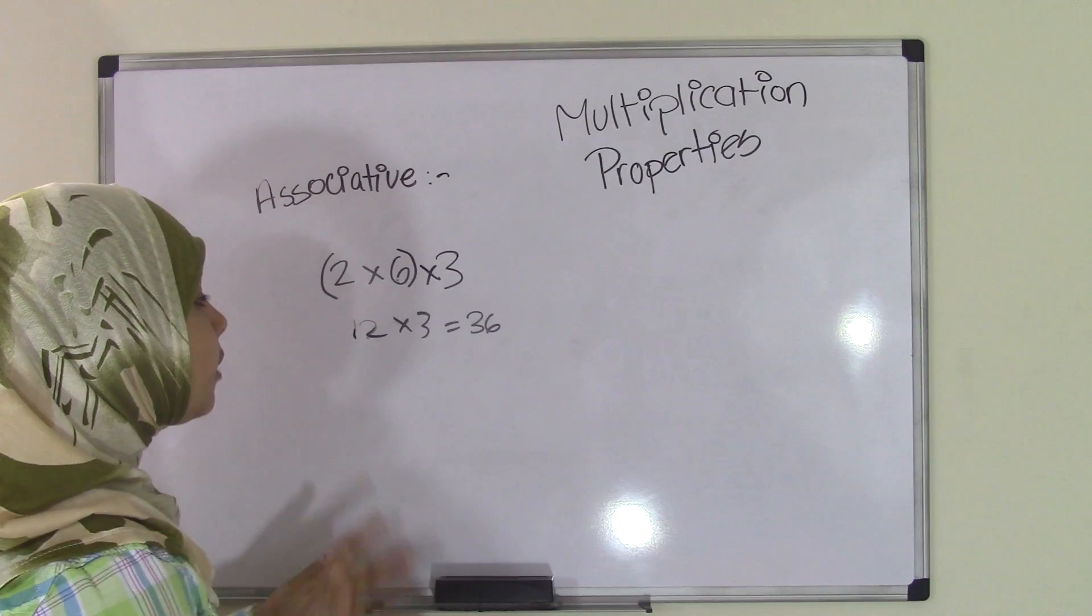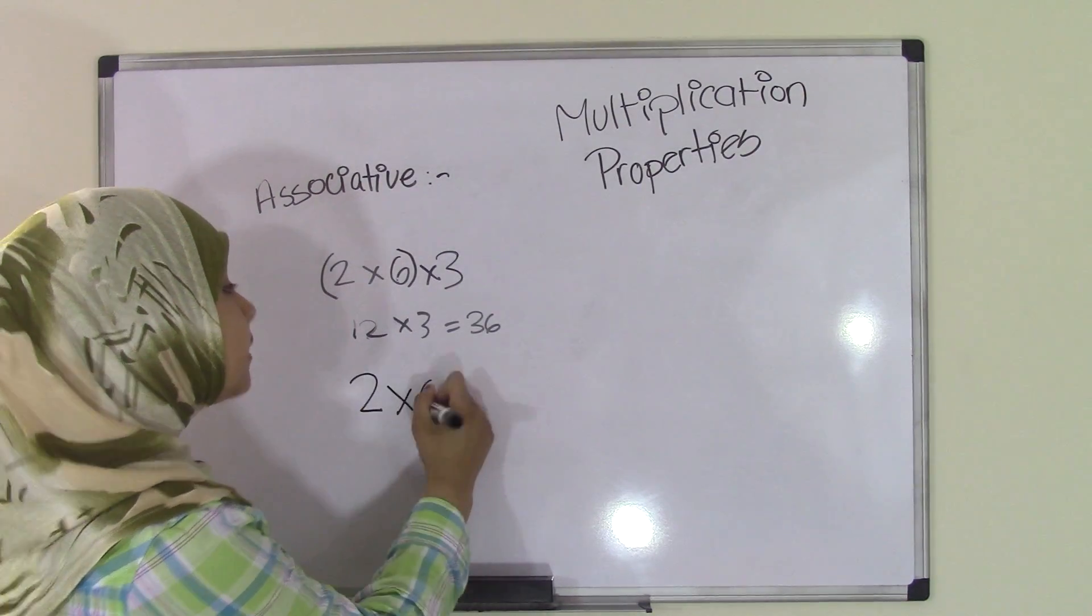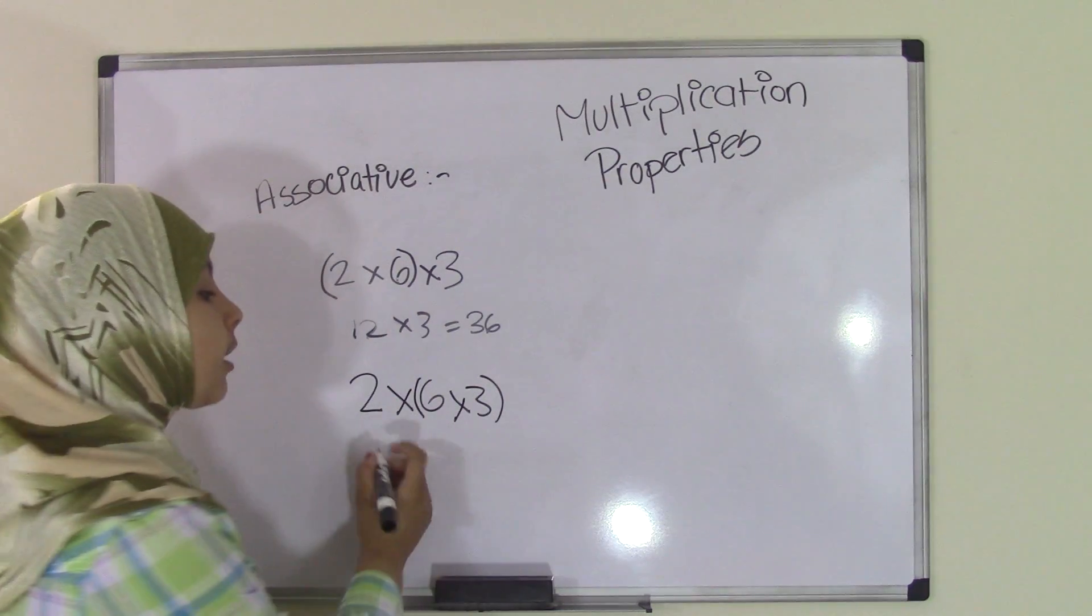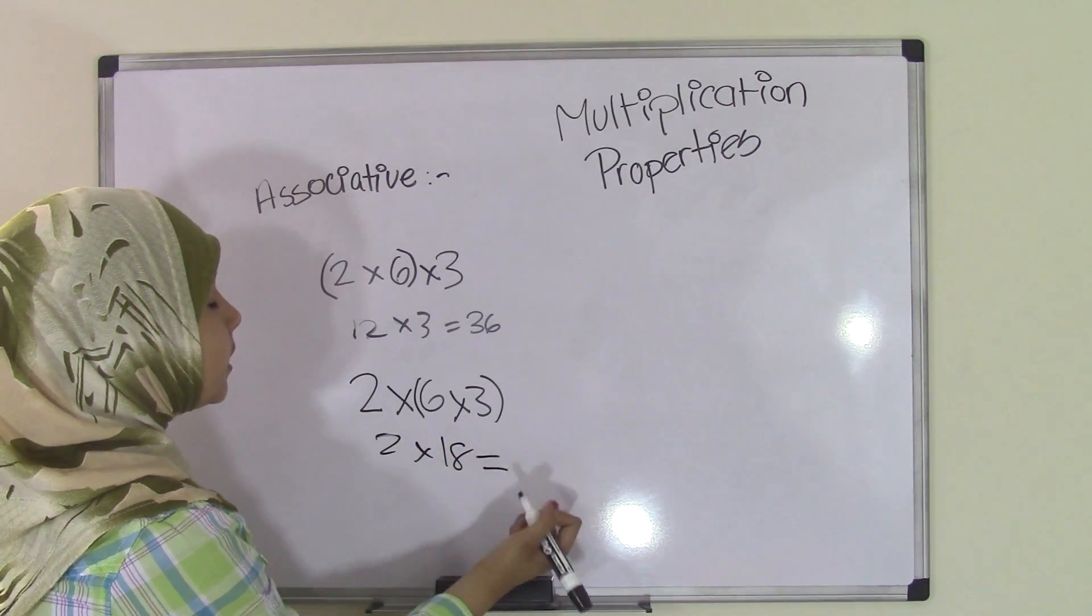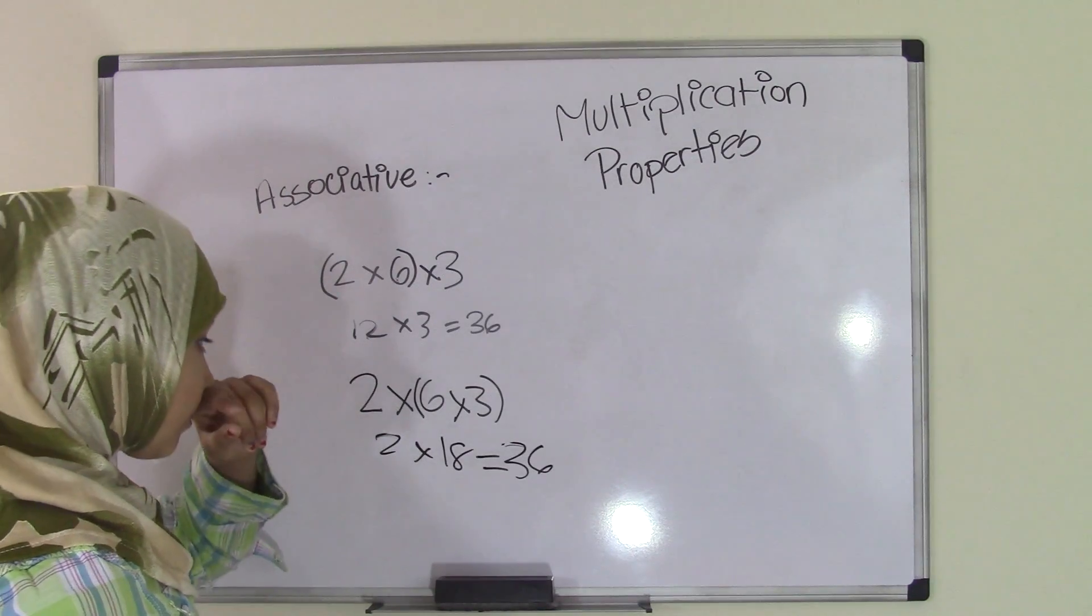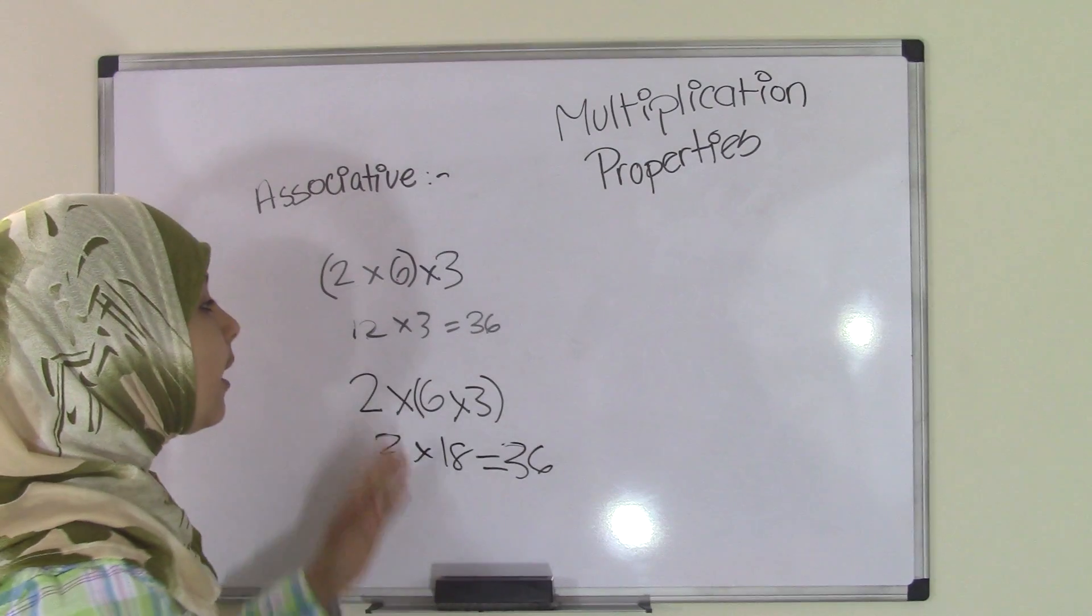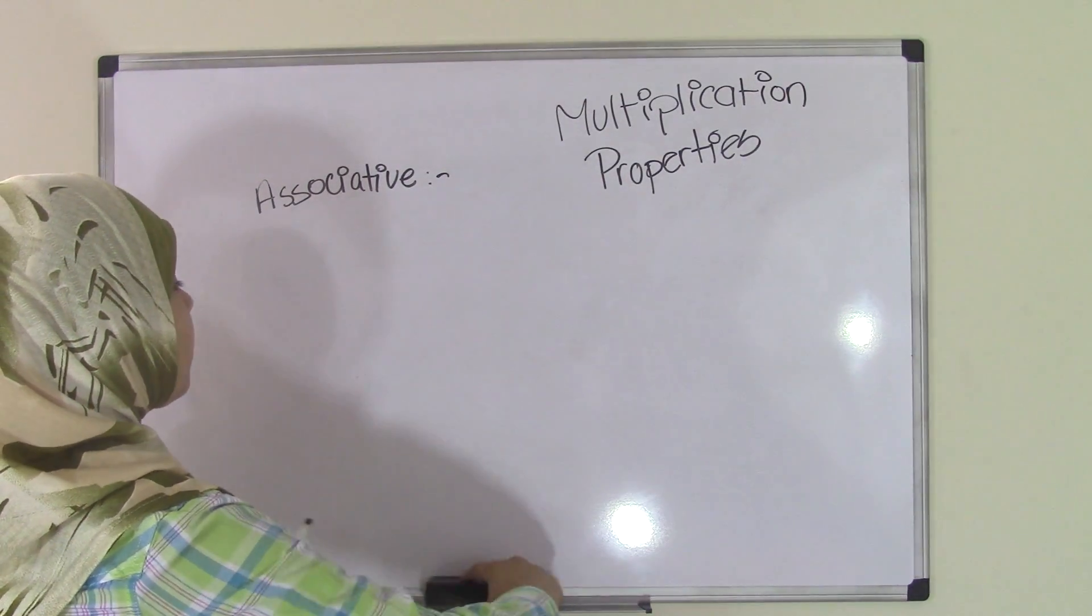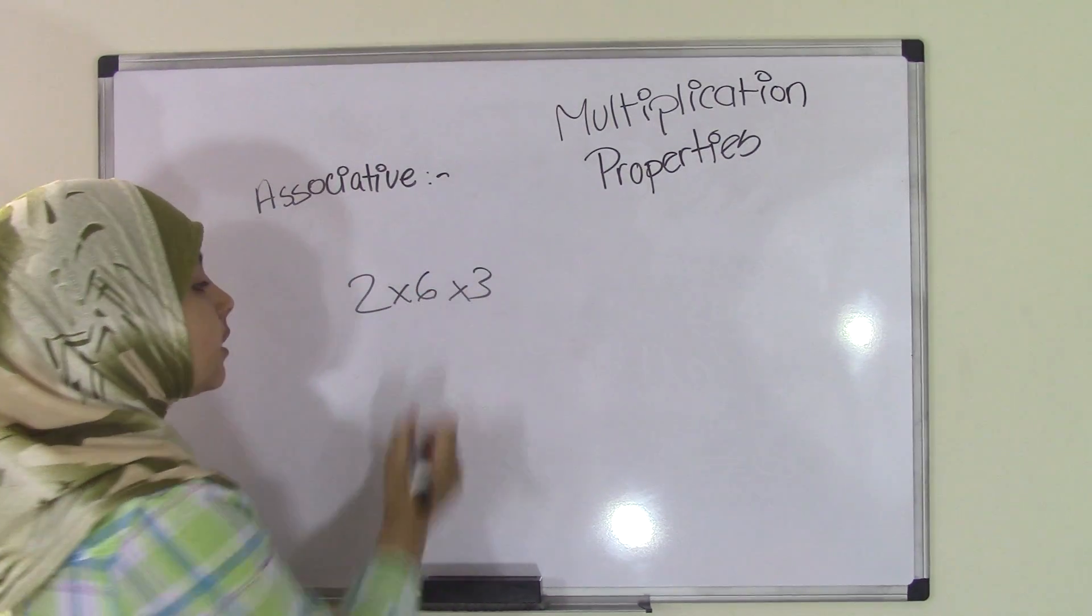Now let's say in the associative property, what you can do is you can also put the parentheses in 6 times 3. So let's say we put them here. You will still get the same product because 6 times 3 is 18, and 2 times 18 always equals 36. But the thing you need to keep in mind is that when you're placing the parentheses, you can't just have them anywhere. So the problem was 2 times 6 times 3, right?